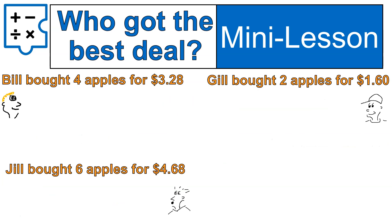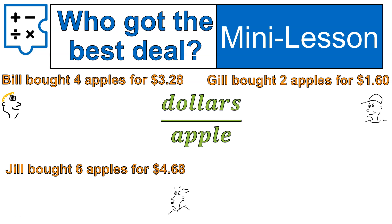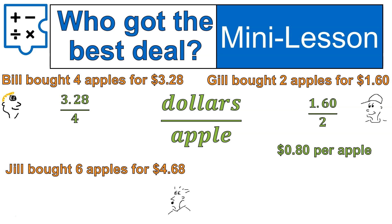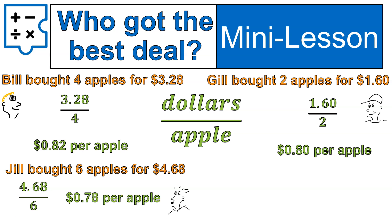Let's look at another example with Bill, Gil, and Jill all buying apples. Bill bought four apples for $3.28. Gil bought two apples for $1.60. And Jill bought six apples for $4.68. Who got the best deal? We're going to calculate the unit rate — the cost per apple — and see who's paying the least. Gil: $1.60 divided by 2 is $0.80 per apple. Bill: $3.28 divided by 4 is $0.82 per apple. Jill: $4.68 divided by 6 is $0.78 per apple. Therefore, Jill is actually getting the best deal — she's paying the least amount for apples.